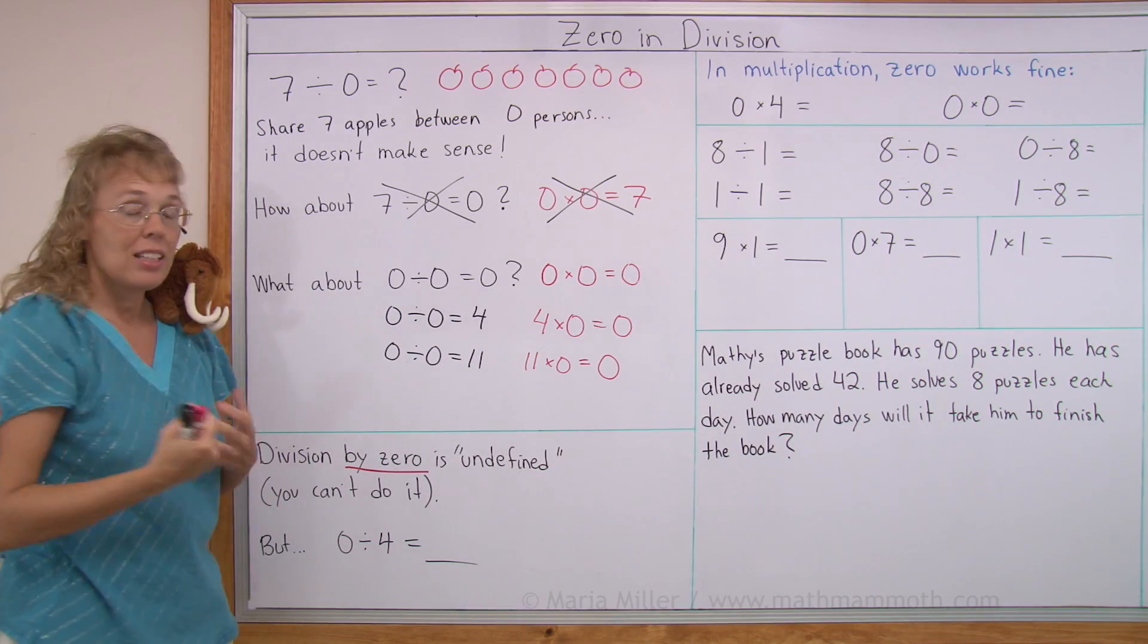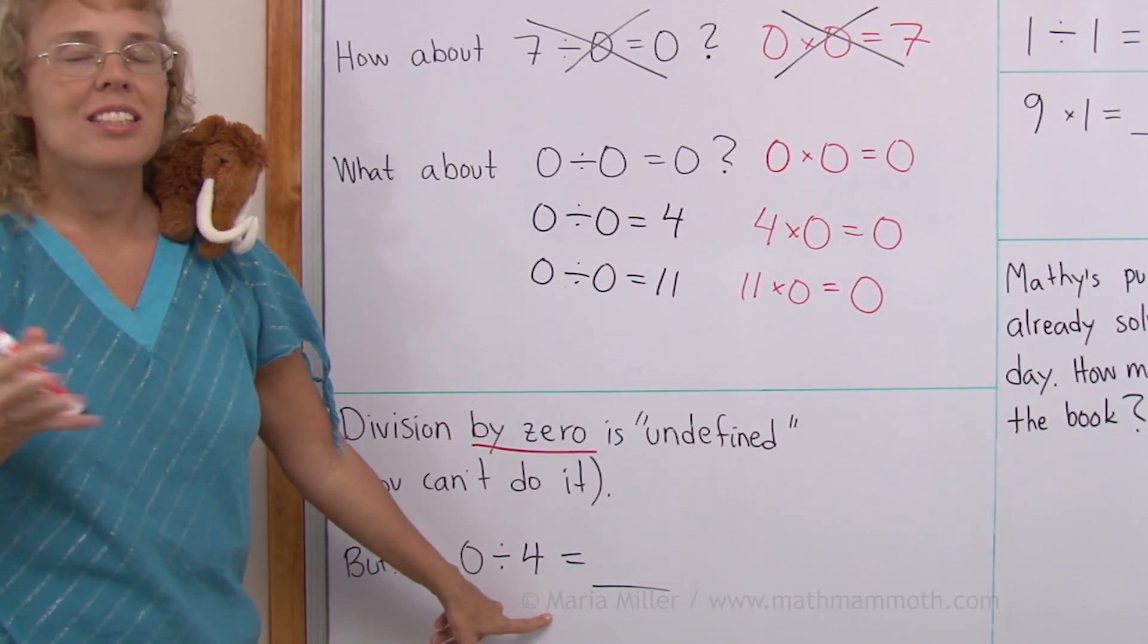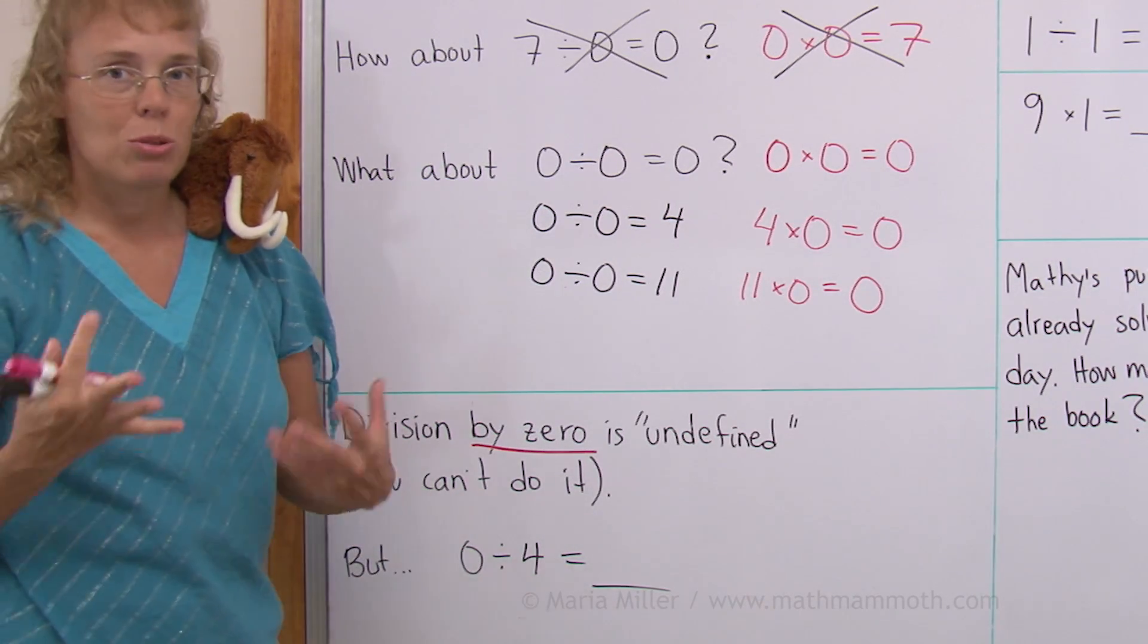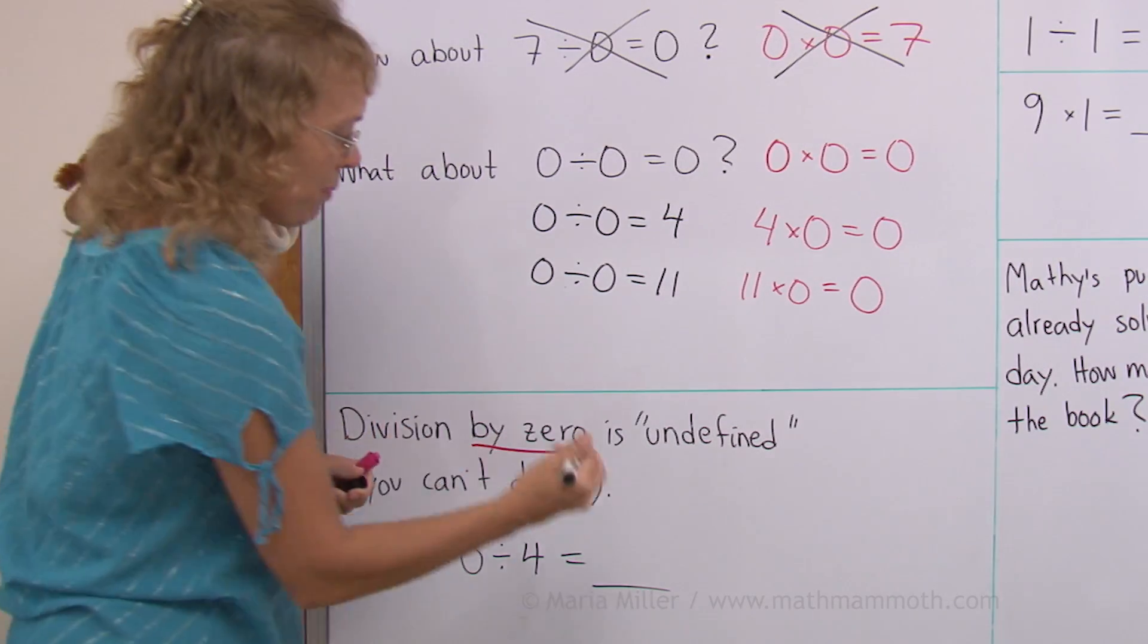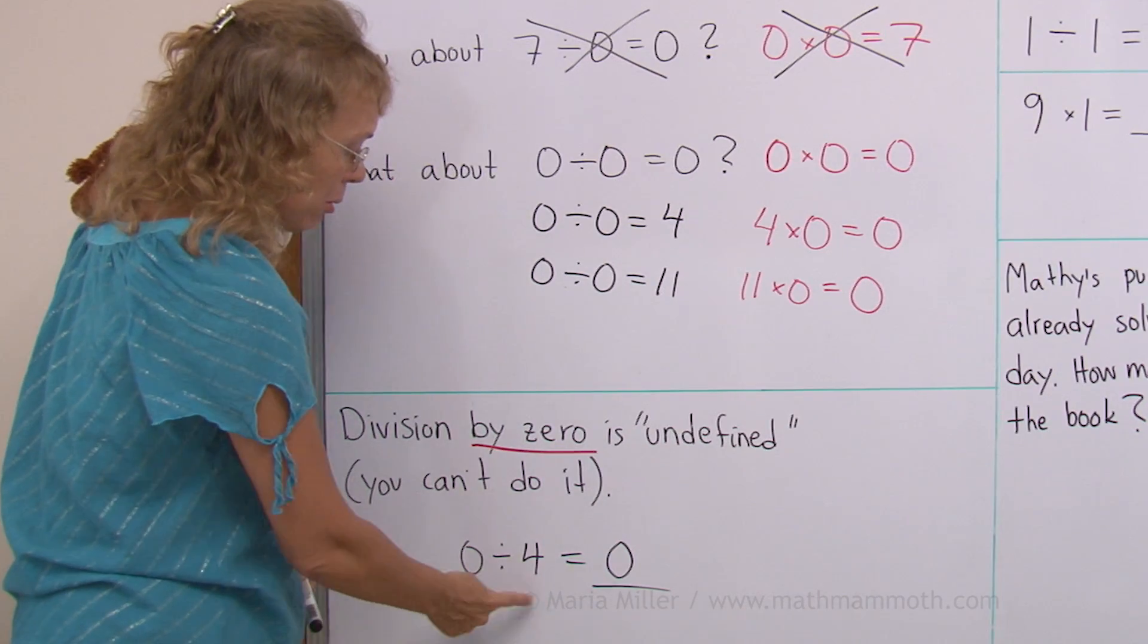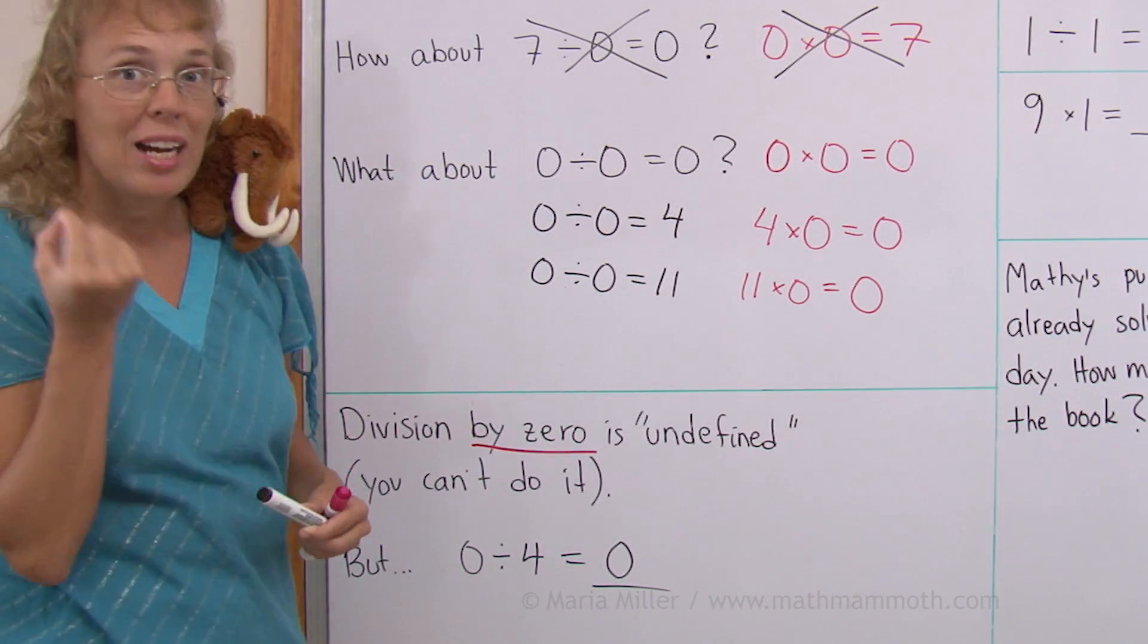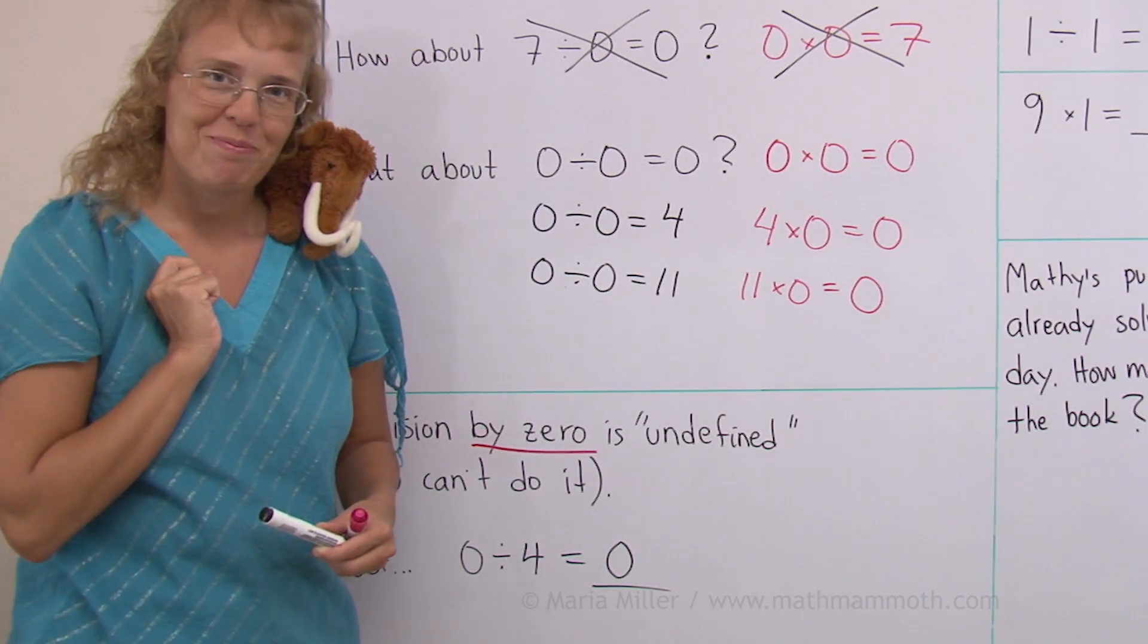I also want to remind you that the other way around, if you have zero divided by some number, then that's just fine. You would have zero apples and four people trying to share the zero apples. Everybody gets zero apples, right? And it works with the multiplication check. Zero times four equals zero. Everything is fine. It is when you're dividing by zero, this number here is zero, that you have problems.